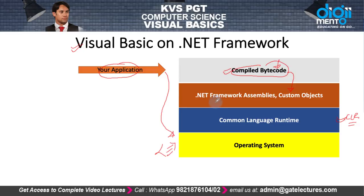At the bottom of the stack we have the operating system, then Common Language Runtime, which supports the .NET framework in the form of assemblies, then your own custom object libraries, and finally your application runs on the compiled bytecode.